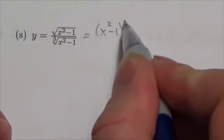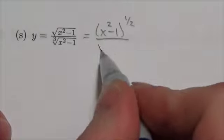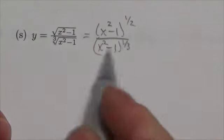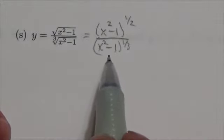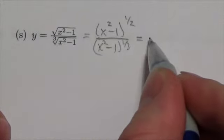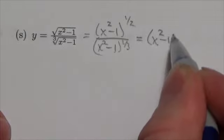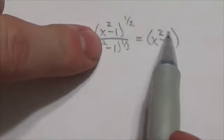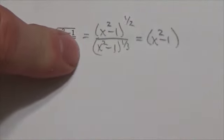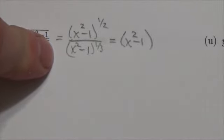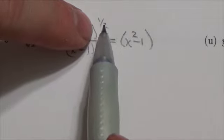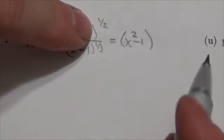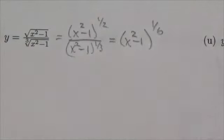this is x squared minus 1 to the 1 half over x squared minus 1 to the 1 third. Notice that the bases of these powers here are the same. So what I should be able to do here is make this x squared minus 1 and find the difference between those two exponents, a half minus a third. Well, the common denominator here will be 6, so this will be 3 sixths minus 2 sixths or 1 sixth.